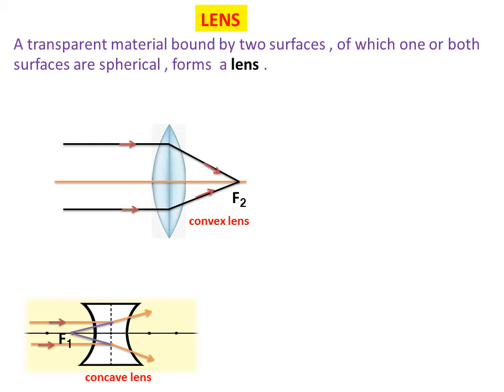This means that a lens is bound by at least one spherical surface. In such lenses, the other surface would be plane.